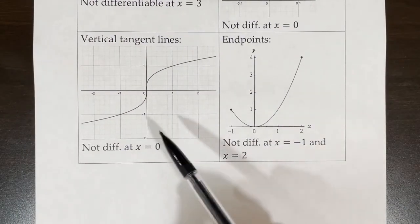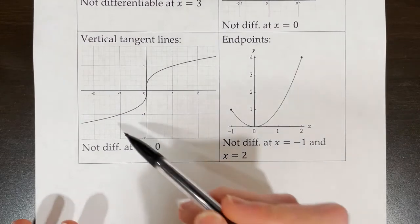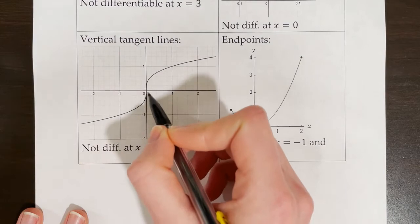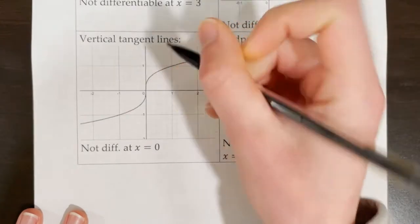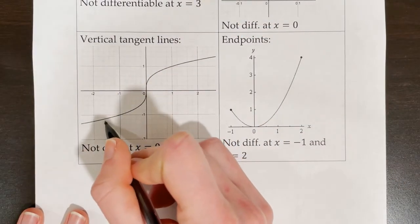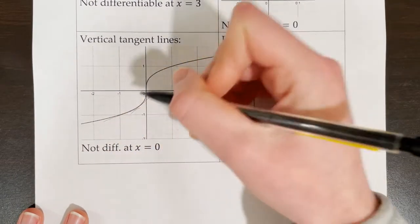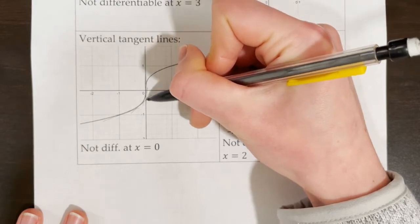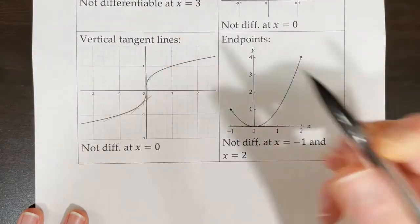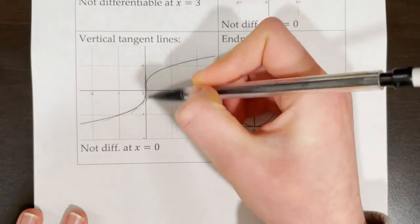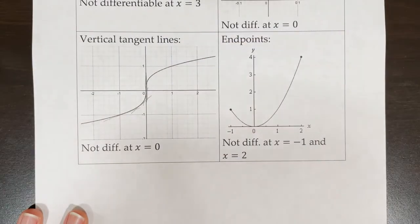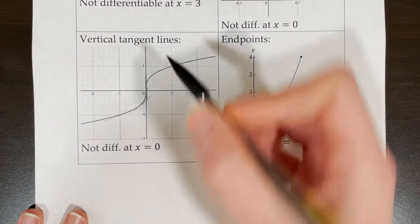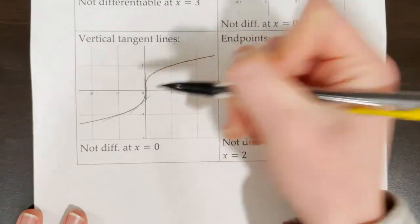Another situation that is continuous but not differentiable is when we have a vertical tangent line. This is the cube root function, and right at x equals 0, if we were to sketch the tangent lines, our tangent lines are going to be getting progressively closer to vertical. Right at 0, we have a tangent line with a slope that is undefined — we have a vertical line. Therefore, this function is not differentiable at x equals 0 because we have a vertical tangent line at x equals 0.